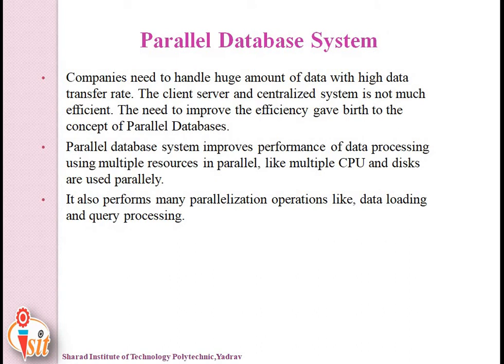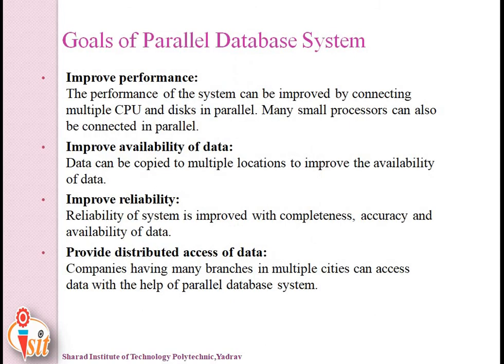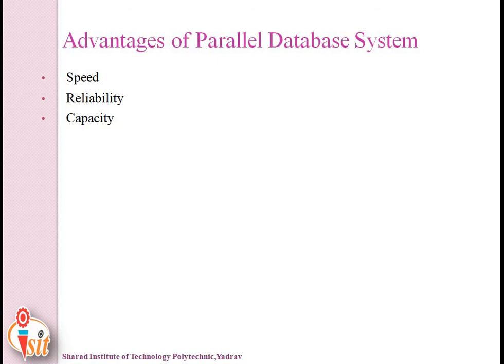A parallel database system improves performance of data processing using multiple resources in parallel — multiple CPUs and disks are used parallelly. It performs many parallelization operations like data loading and query processing. A parallel database system is designed to improve performance, improve availability of data, improve reliability, and provide distributed access to data. Advantages are speed, reliability, and capacity.